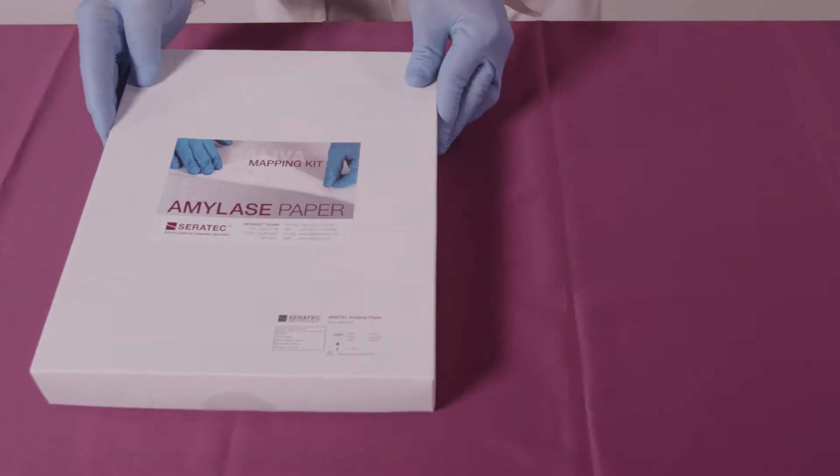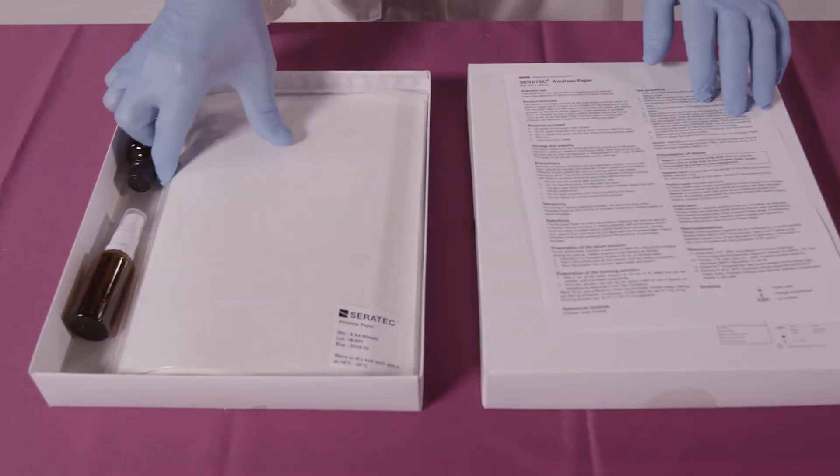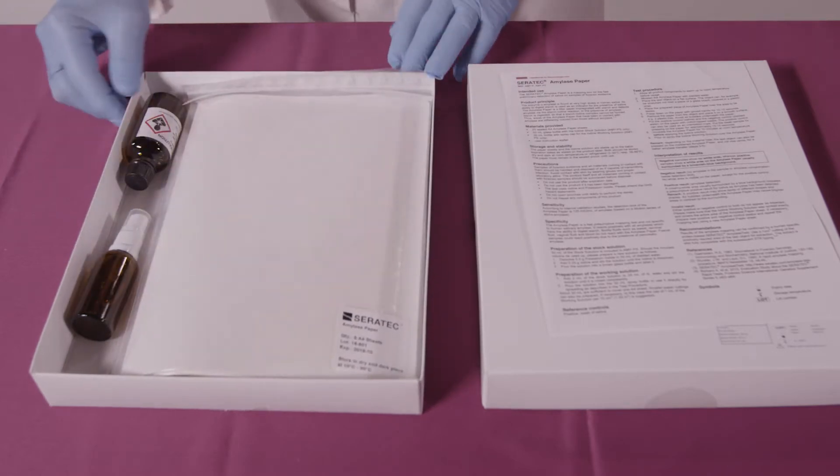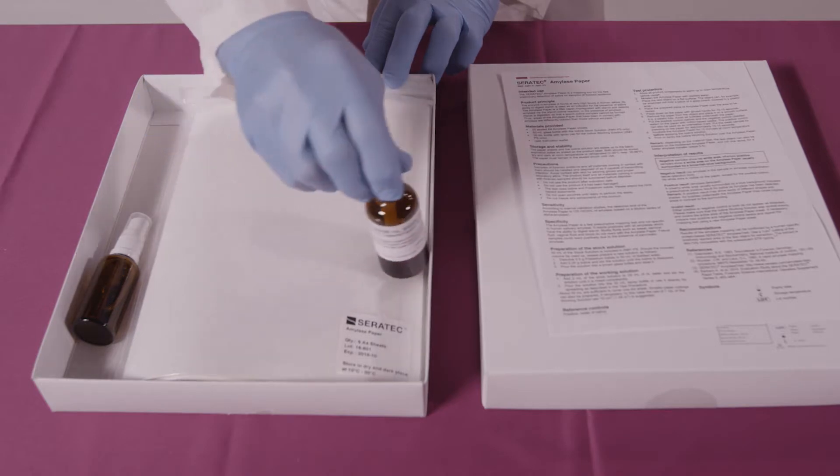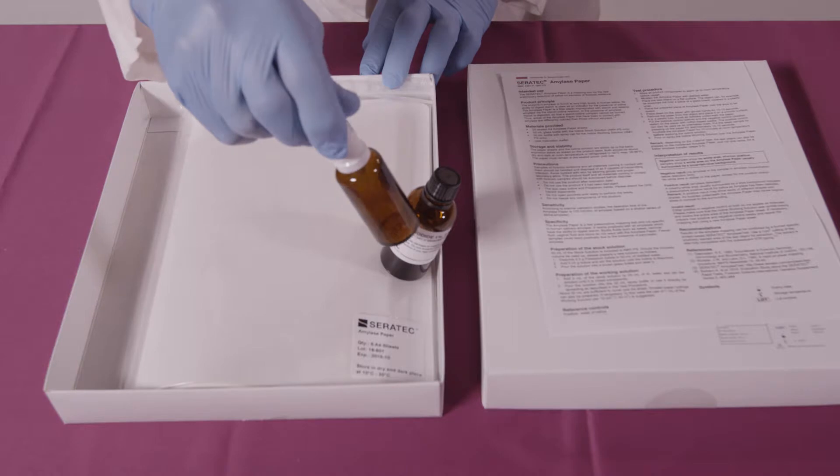The Ceratec amylase paper kit contains an instruction leaflet, 25 sealed amylase paper sheets, 50 milliliter glass bottle containing iodine stock solution, and a 30 milliliter plastic spray bottle for application of the working iodine solution.